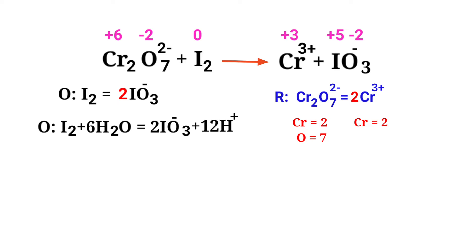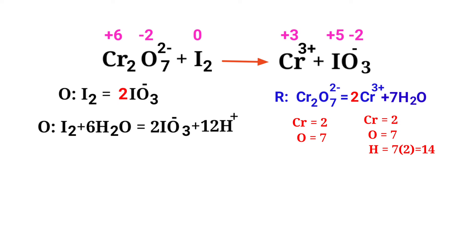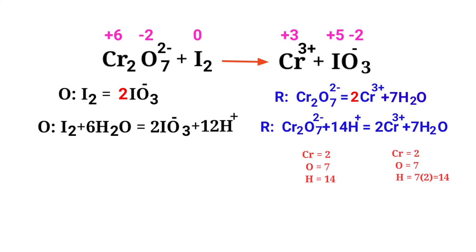The chromium atoms are balanced. Now we need to balance the oxygen atoms by producing water molecules. The oxygen atoms are now balanced. Next, balance the hydrogen atoms by producing H+ ions. Now the number of atoms are balanced in the reduction half reaction.